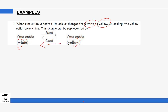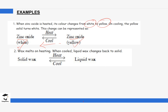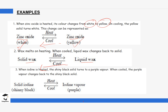Another example is the melting of wax. If you heat a solid wax, it changes from solid to liquid, but it is the same wax — the only difference is a change of state. If you cool it, it goes back to its original state with no change in mass and no new substance formed. Another example is iodine: when heated, it turns from a shiny black solid into a purple vapor through sublimation, but it is still iodine. If you cool it back, it returns to a shiny black solid.